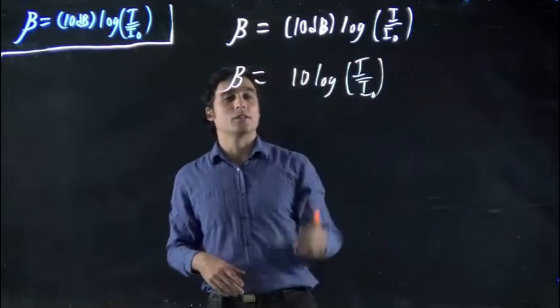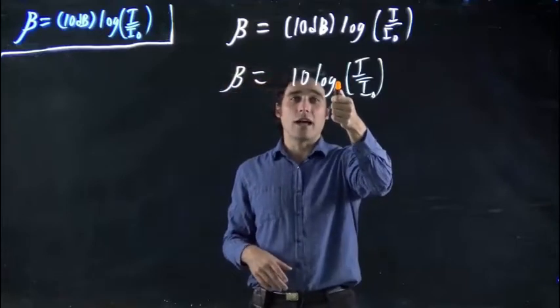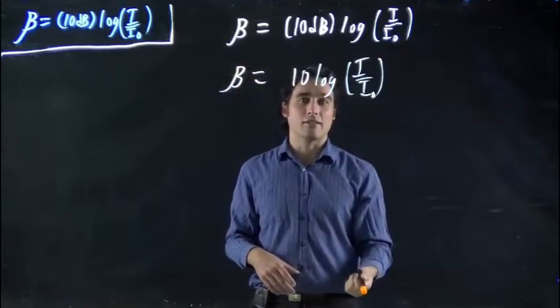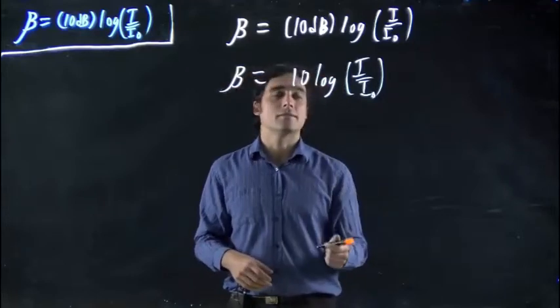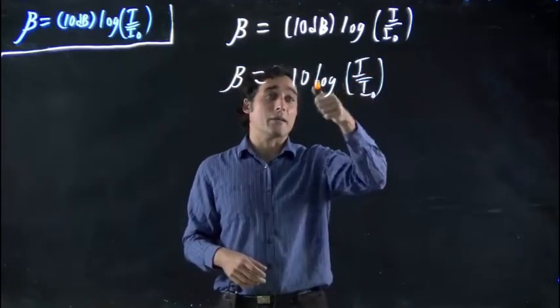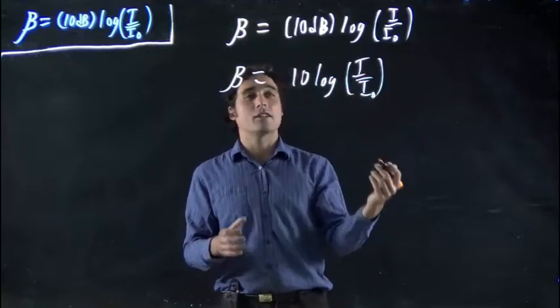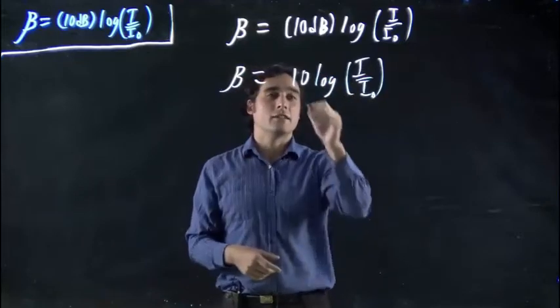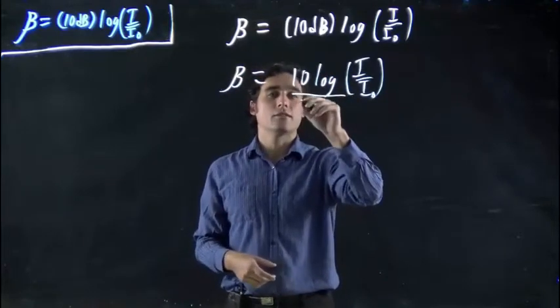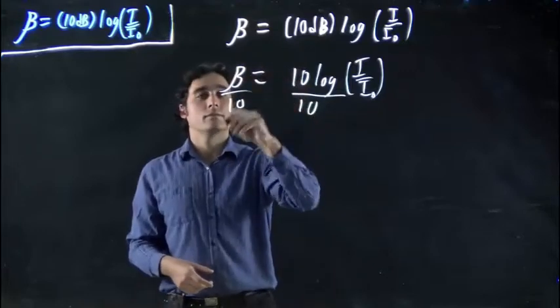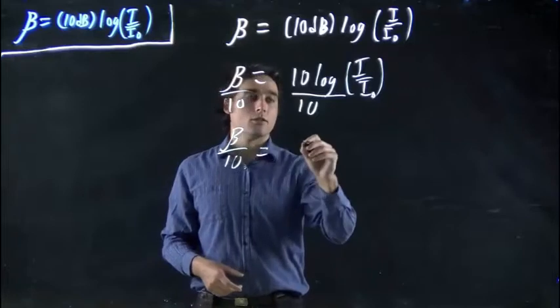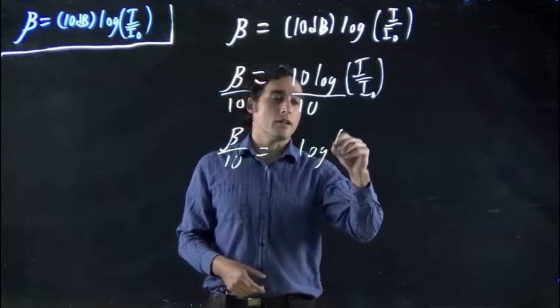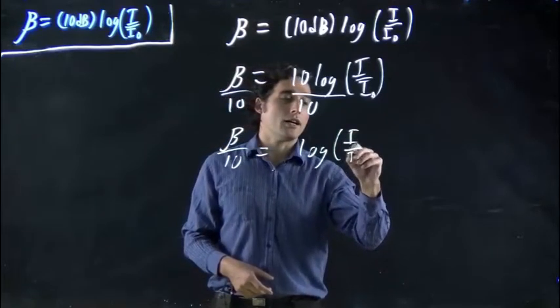We know this is decibels. Also bear in mind that if you don't have a base written, it's log to the base 10. Decibels is log to the base 10. Important to keep in mind later. Well, if I want to get towards the I, I'm going to have to get rid of this log. But before I can get rid of the log, I've got to get rid of this 10. So I've got to divide both sides by 10. So beta over 10 is equal to log of I over I₀.